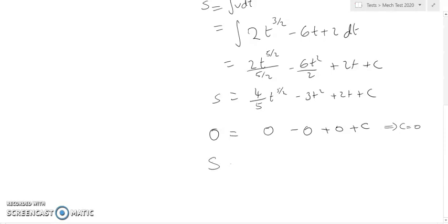So our displacement equation is 4/5 t to the power 5/2 minus 3t squared plus 2t. It said find the distance O to A. A is when the acceleration was 0, that was when t equals 4.